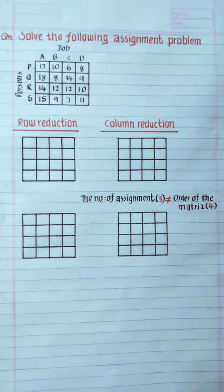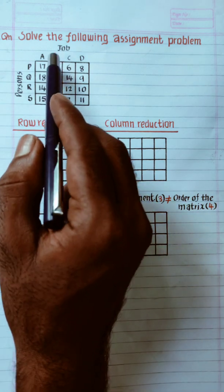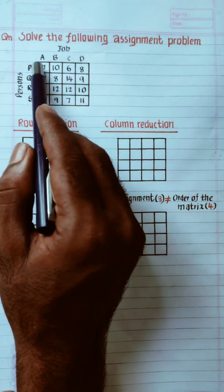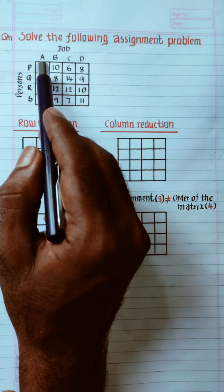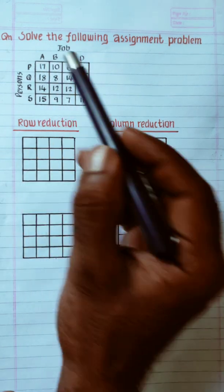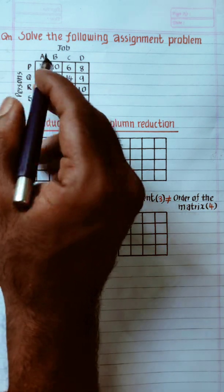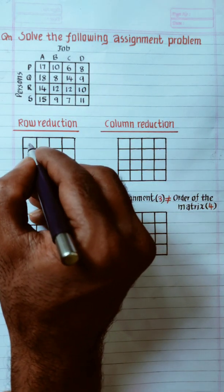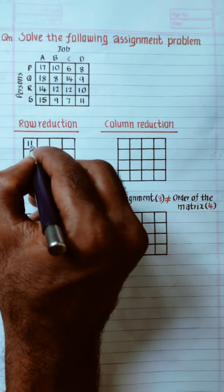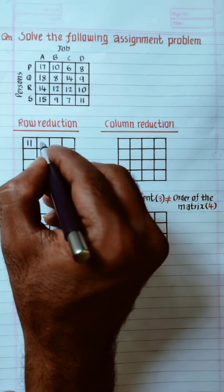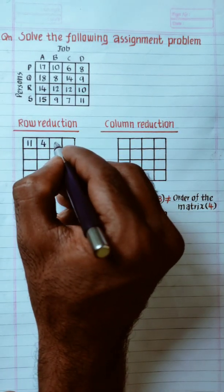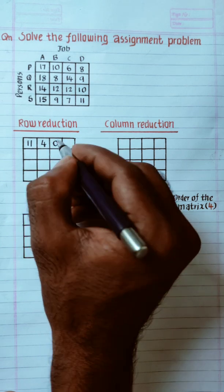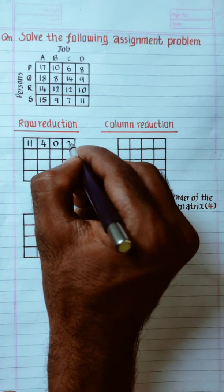First, we will do a row reduction. The first row's minimum value is 6. So 6 minus 6 is 0. 14 minus 6 is 8, so that equals 1 (approximately). 10 minus 6 is 4. 6 minus 6 is 0. 8 minus 6 is 2.